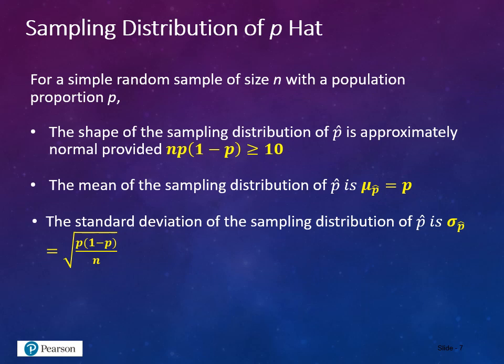For a simple random sample of size n with a population proportion p, the shape of the sampling distribution of p-hat is approximately normal, provided n times p times the quantity (1 minus p) is greater than or equal to 10. The mean of the sampling distribution of p-hat is mu sub p-hat, which equals the population proportion p. The standard deviation of the sampling distribution of p-hat is sigma sub p-hat, equal to the square root of p times (1 minus p) all over n.